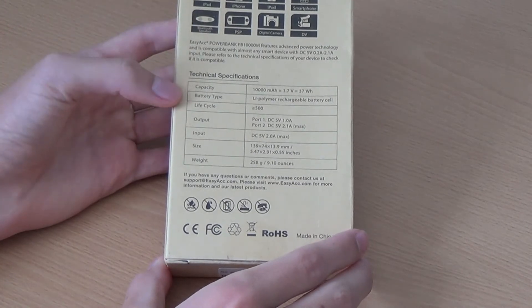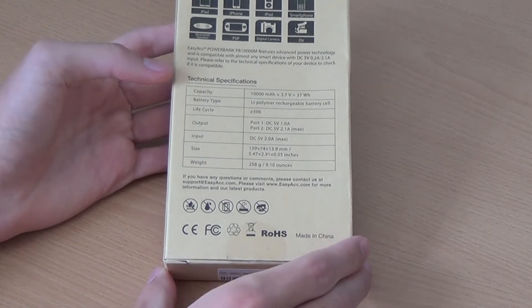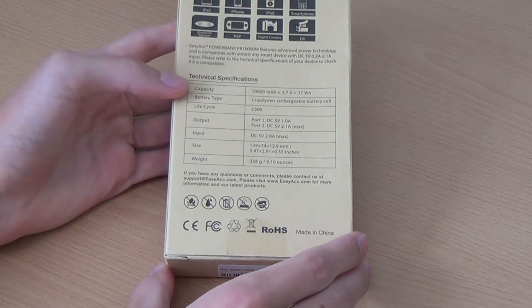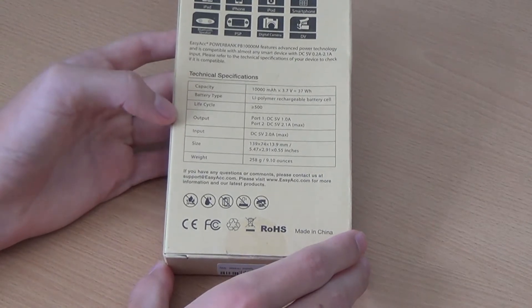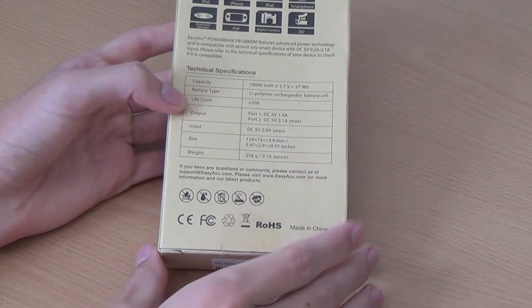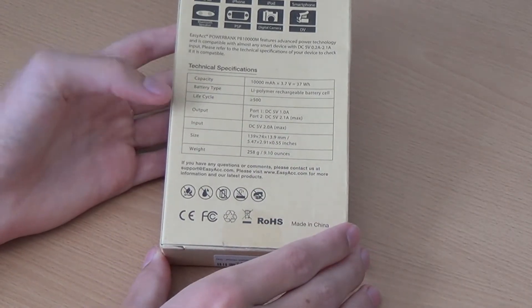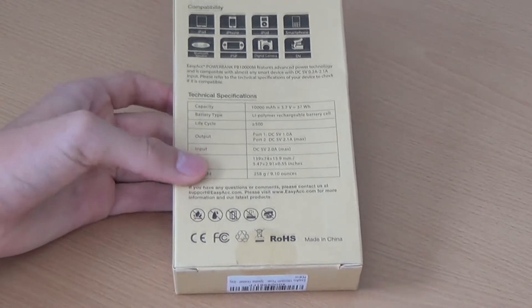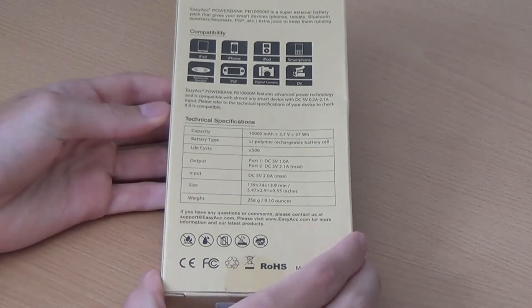The capacity, what battery type it actually has in it, its life cycle - so how many times you can charge it roughly before it's knackered. Its output - it's got two ports on it, both at different voltages - and how big it is and how much it weighs, just information like that really. Nothing too interesting.